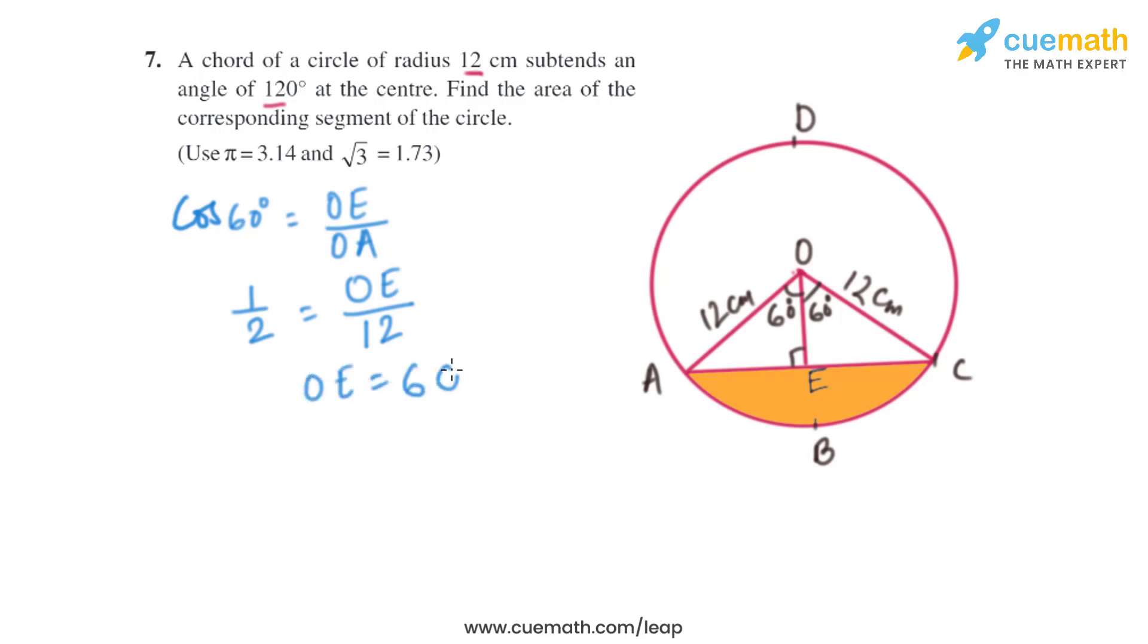Also, we know that sin 60 equals AE upon OA in the same triangle AOE. The value of sin 60 is root 3 by 2, and that equals AE divided by 12.